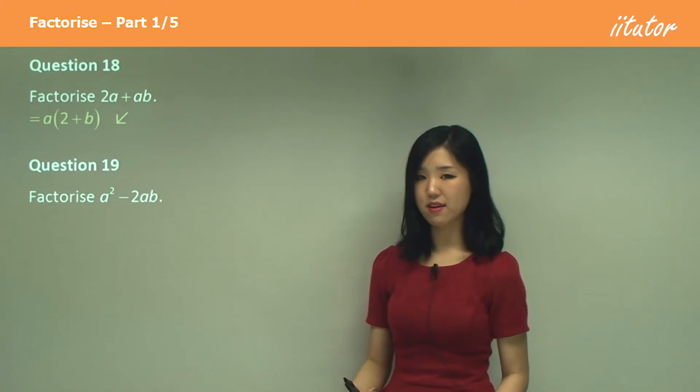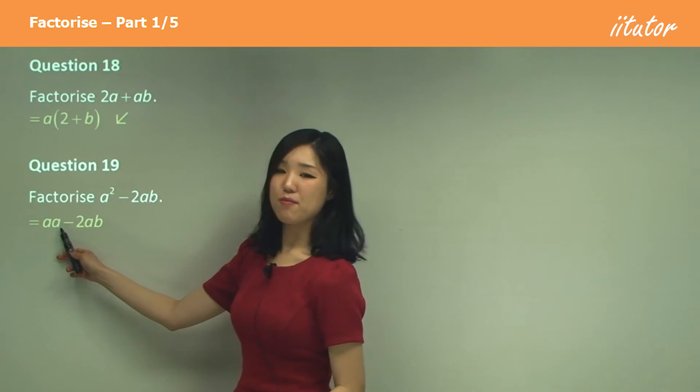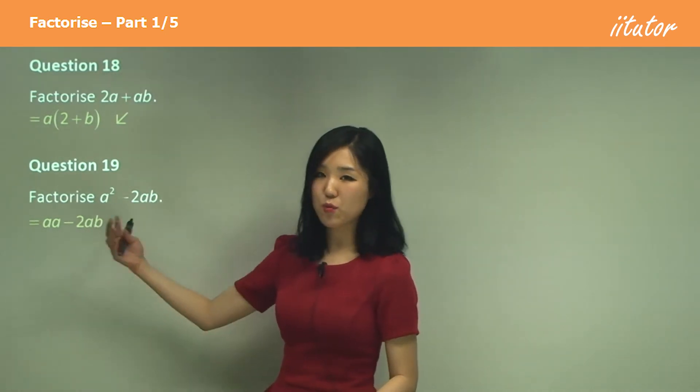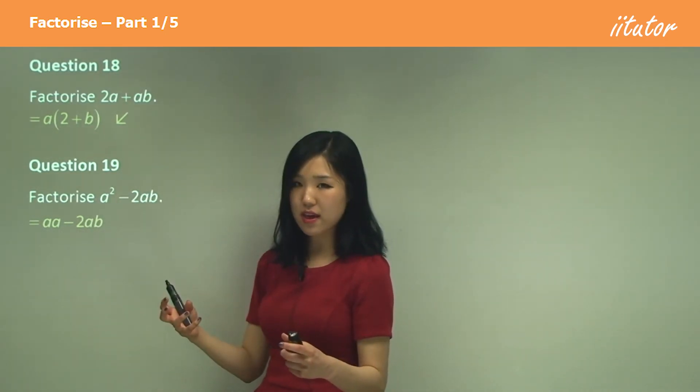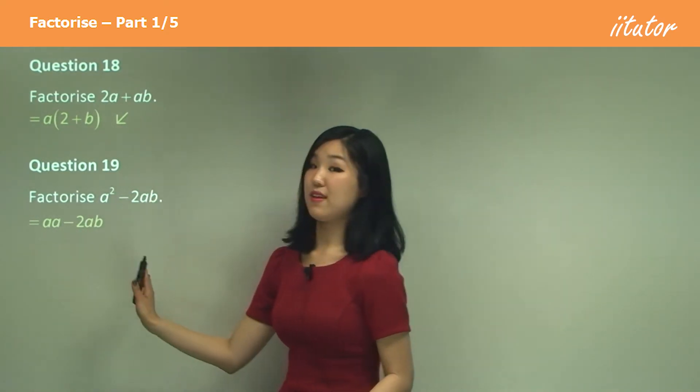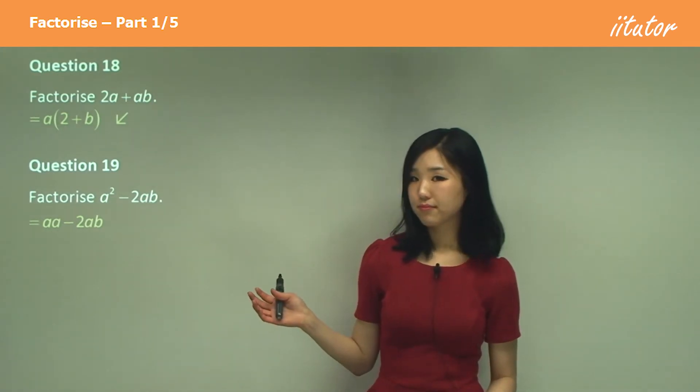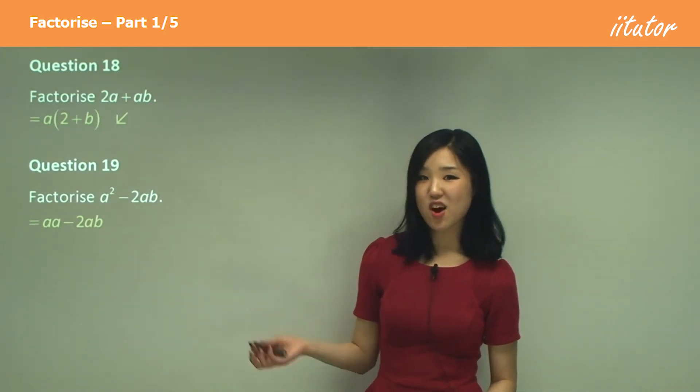Now what I'm gonna do here is change a squared to a times a, because a times a is a squared, isn't it? So I've just kind of expanded that out. So a squared is a times a, and that one just leave it as is. Now guys, what is common? A is common, isn't it?